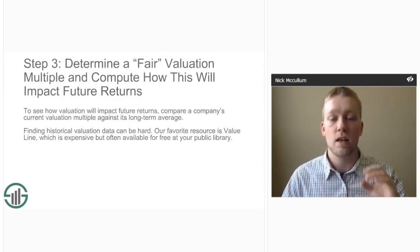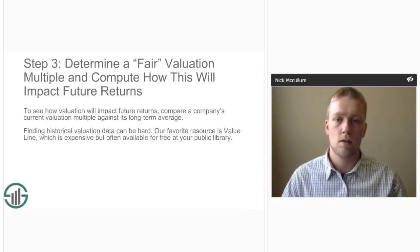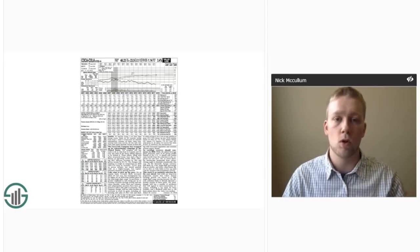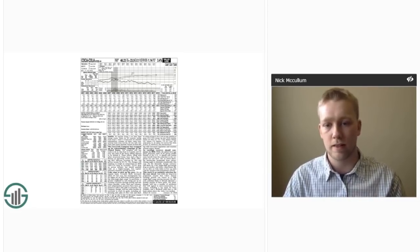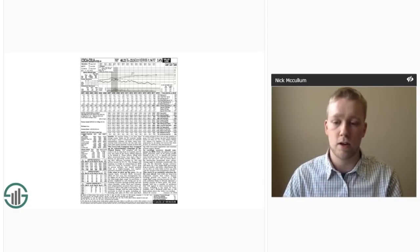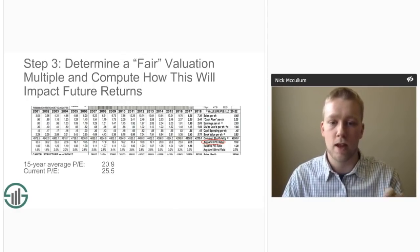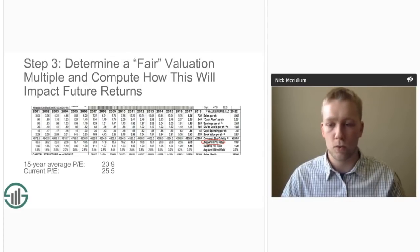The difficult part is finding historical data for valuation multiples. We prefer to use ValueLine data wherever possible. ValueLine is a subscription-based research company that is quite expensive, but fortunately you can usually access a free subscription through your local public library. ValueLine provides research sheets for most publicly traded stocks. There's a top section of charts, a middle section of data, and a bottom section of written qualitative analysis. If you zoom into the middle section, you'll see average annual price-to-earnings ratio data. Coca-Cola's average P/E ratio over the past 15 years has been 20.9.